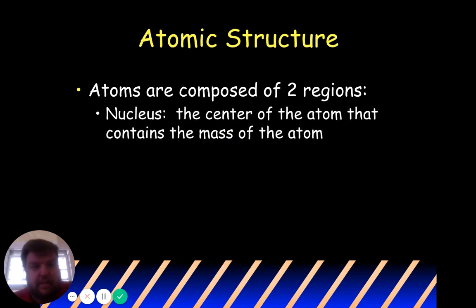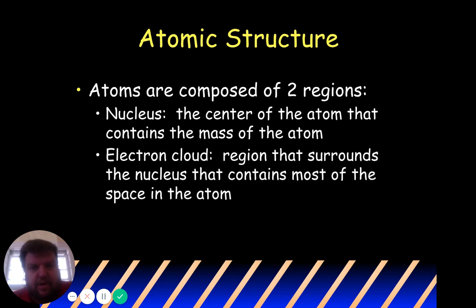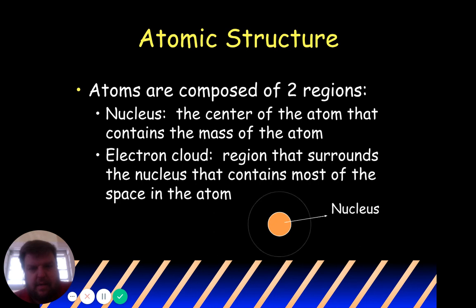Atoms are composed of two regions. There's a nucleus — the very center of the atom — that contains the majority of the mass of the atom. The outside of the atom is where the electrons live, and they have hardly any mass. So if someone asks where the mass of an atom is, it is in the nucleus. Then there's the electron cloud, the region that surrounds the nucleus. An atom is made up mostly of empty space. You have the nucleus and then the electron cloud — those are the two regions.